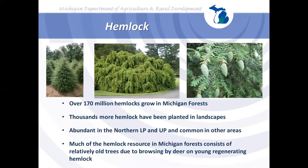Michigan has about 170 million hemlocks growing in its forests, plus thousands more planted in landscapes. Hemlock is abundant in both the northern lower peninsula and the upper peninsula, though it can occur in pockets almost anywhere. Much of Michigan's hemlock resource consists of relatively old trees, with little regeneration occurring due to intense browsing by deer, which eat hemlock seedlings as soon as they appear.